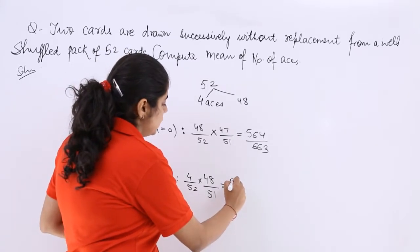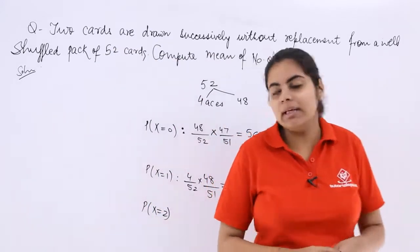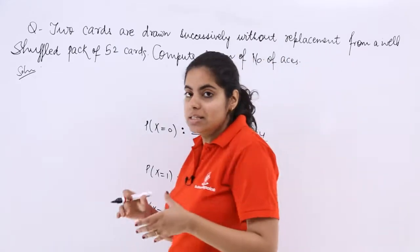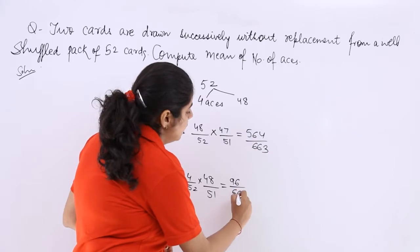This answer should be, we have to multiply and then the denominator would remain the same. The denominator is 52 into 51 only. So this answer should be 96 over 663.